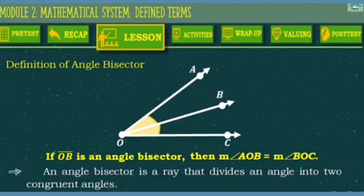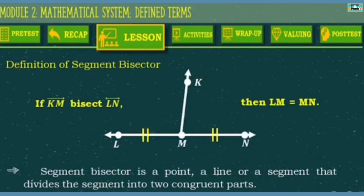An angle bisector is a ray that divides an angle into two congruent angles. Next, let's have segment bisector. This is similar to angle bisector, but the line or ray bisects a line segment instead of an angle. We have line LN. If ray KM bisects line segment LN, then LM is equal to MN. A segment bisector is a point, a line, or a segment that divides the segment into two congruent parts.